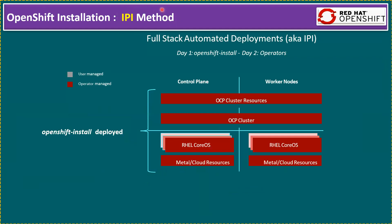IPI stands for Installer Provisioned Infrastructure and we can also call it full stack automated deployment. Anyone referring to a full stack automatic deployment is also referring to IPI. Generally we have day one operations — the OpenShift cluster install — and day two daily operations. In this diagram, the red color means operator-managed and the gray color means user-managed. Full stack automated means there is no gray color — the entire stack is fully automated using the OpenShift install command.